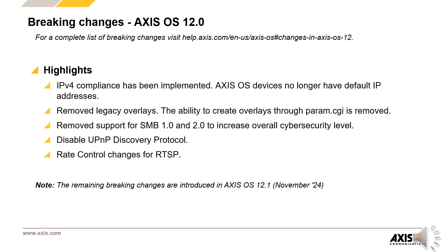There are also updates in rate control. As the Vapix rate control API has evolved over the years — max bitrate, variable bitrate, and average bitrate are available today for Axis cameras — the relationship between some URL options and param CGI parameters had become complicated. That is why we simplified the usage and introduced some behavioral changes.